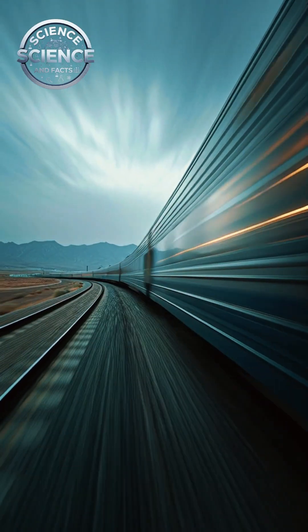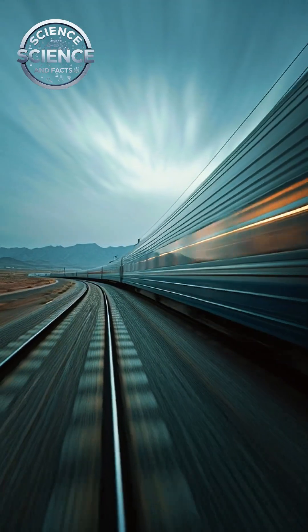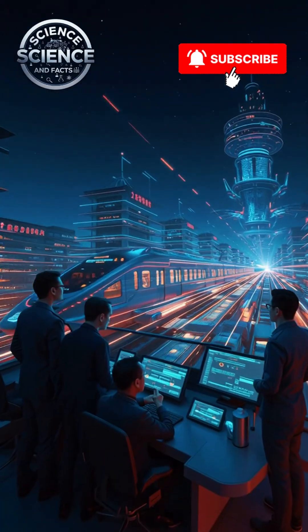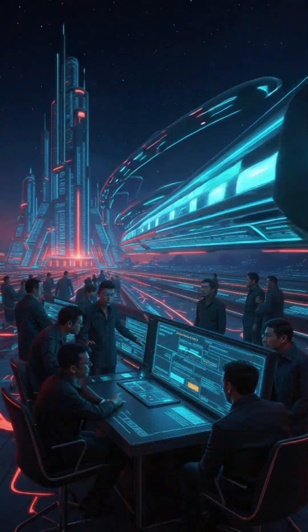Inside a sealed low-pressure tube, magnetic levitation removes friction entirely, allowing the train to float and accelerate with almost zero resistance.